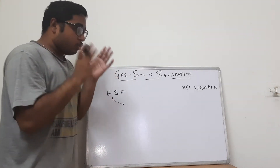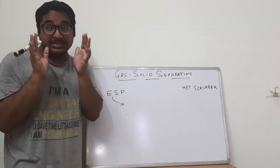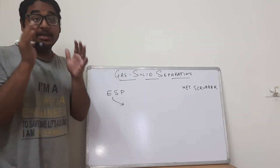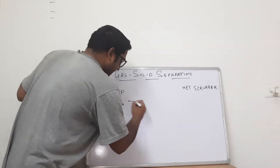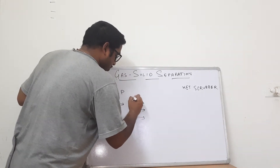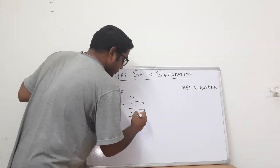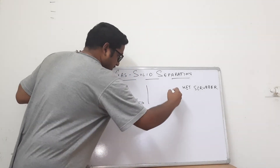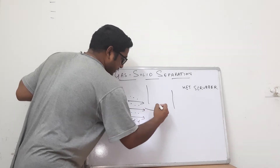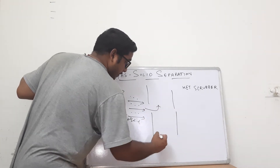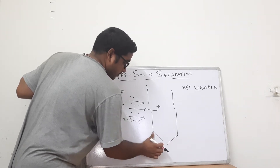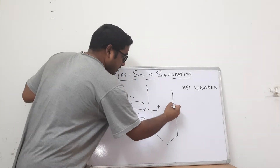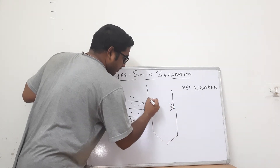What is ESP? Electrostatic precipitators — as the name suggests, there is something to do with electricity or electrostatic movement. Let us understand what happens in an electrostatic precipitator. Basically, the gas that is laden with solid particles — gas plus solid — enters into the system. There is a structure wherein the gas enters and moves up through the system.